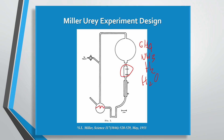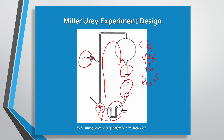Down here they had water, which they heated with a flame to evaporate it, forcing it into a clockwise pattern. Here is the inlet for the gases they put in. Sparks were sent through the electrodes to simulate lightning in the presence of all these gases. The water vapor was then cooled — that's what this cooling system is — so it would condense back into a liquid and flow back into the collection flask.